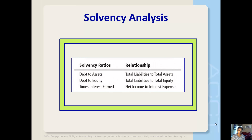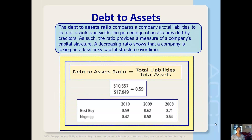Although it's impossible to know whether a company will or will not be able to pay future obligations and remain solvent, three ratios can provide some indication of a company's general solvency. They are: first, debt to assets; second, debt to equity; and third, times interest earned. These ratios show how, as a company uses more financial leverage, it creates an opportunity for greater returns to stockholders, but also greater solvency risk.